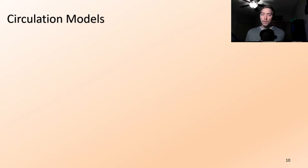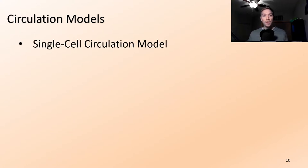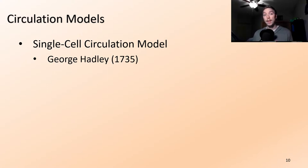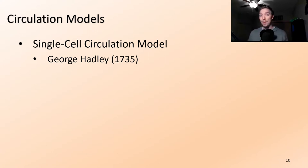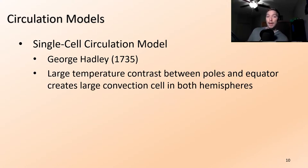There are a couple of different circulation models. The first one is the single-cell circulation model, developed by George Hadley in 1735 — that name might sound familiar. This model says that there is a large temperature contrast between the poles and the equator that creates a large convective cell in both hemispheres.